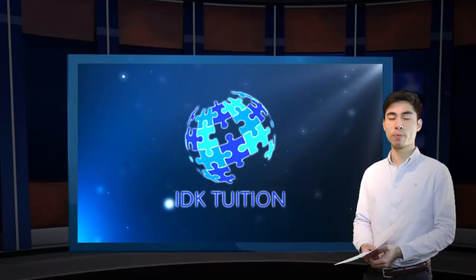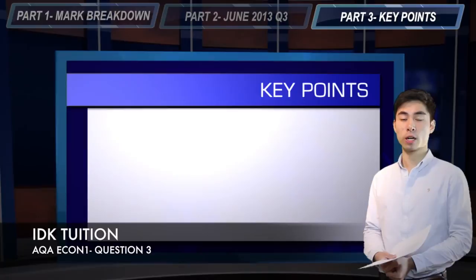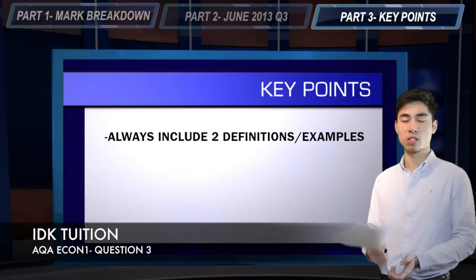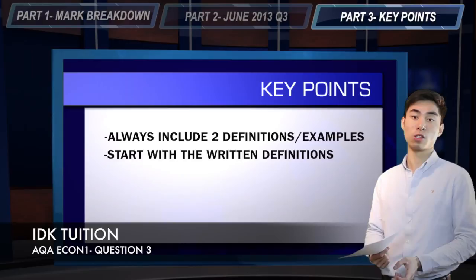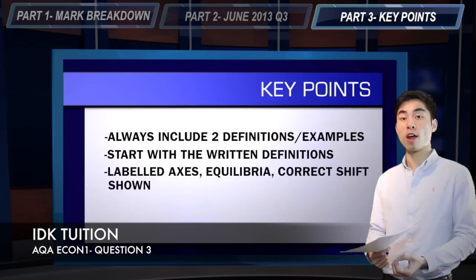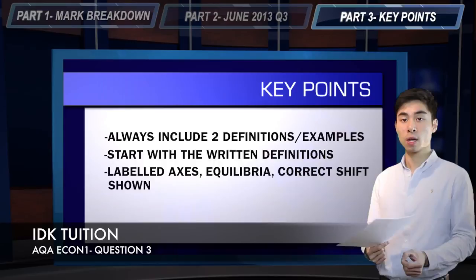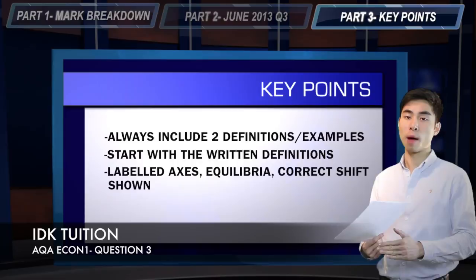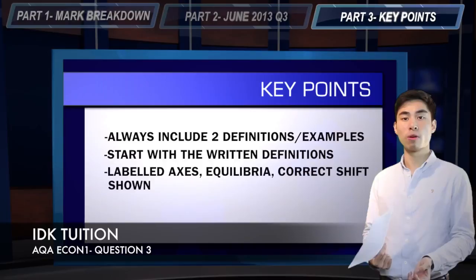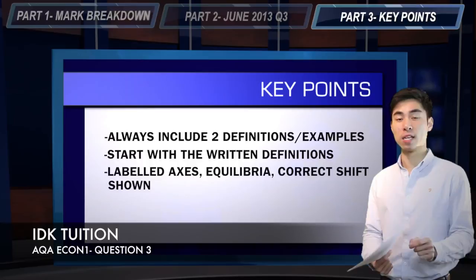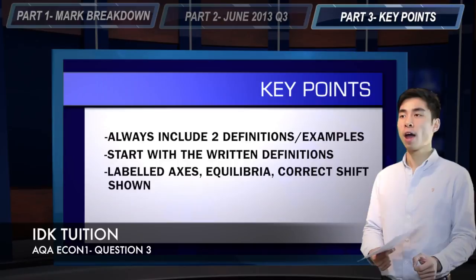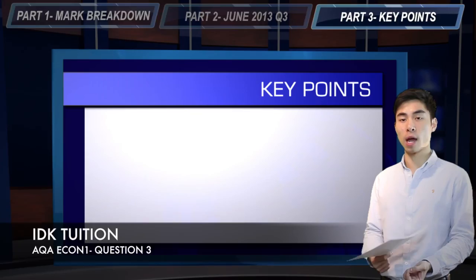Just to recap the key points: start off with your definitions and include relevant examples. There's no negative marking on this paper, so even if they're not awarding you marks for examples, they're not going to take marks away. If you're struggling to see what to define, just define demand and supply — there'll be two marks available for that. A fully labelled diagram means equilibrium values labelled, axes fully labelled, and a correct shift shown in your curves. And finally, if you've already picked up eight marks for your diagram, examples, and definitions, it makes the written explanation much simpler — you only need two links out of a potential four or five to obtain full marks on this question.